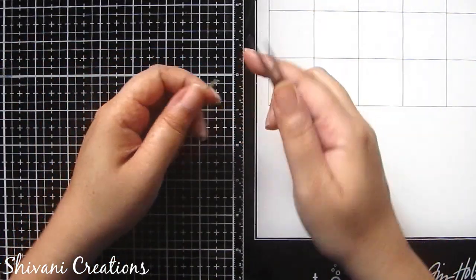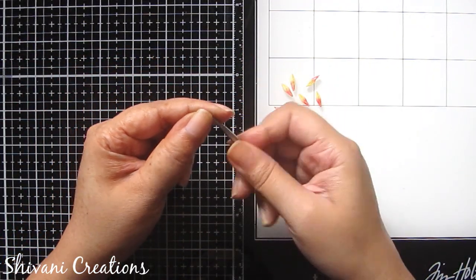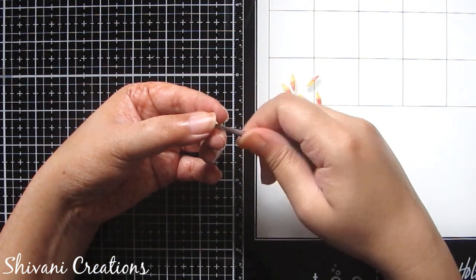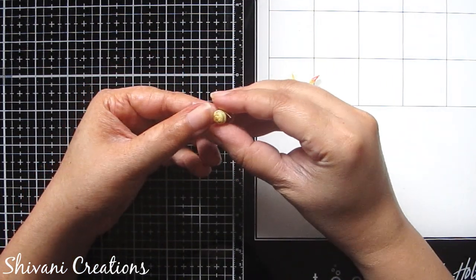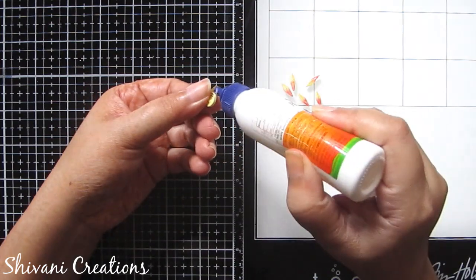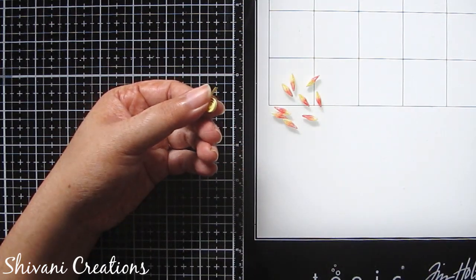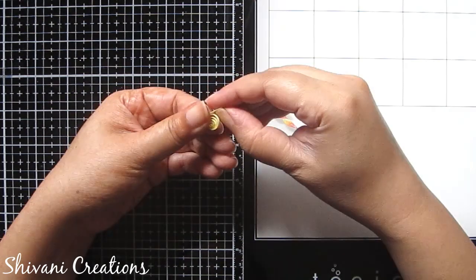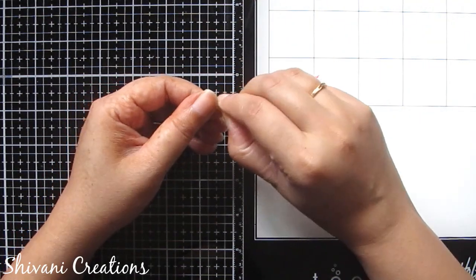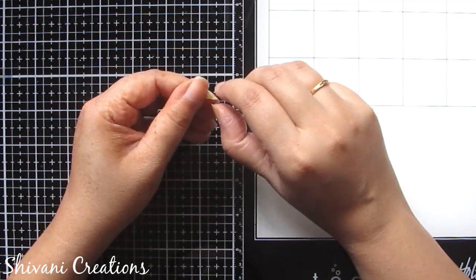First I am starting with my first flower. For the petal I am taking one fourth strip of light yellow color in two mm. For today's project I am using two mm strips only, but if your mold's depth is little high, you can also use three mm strips.